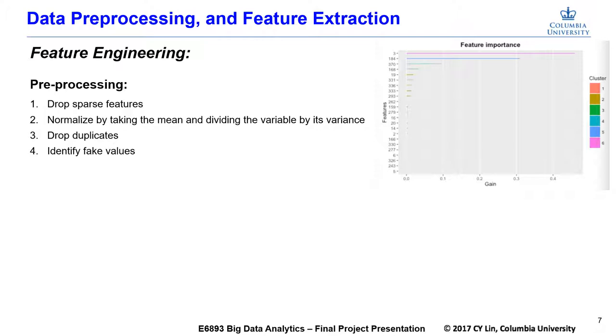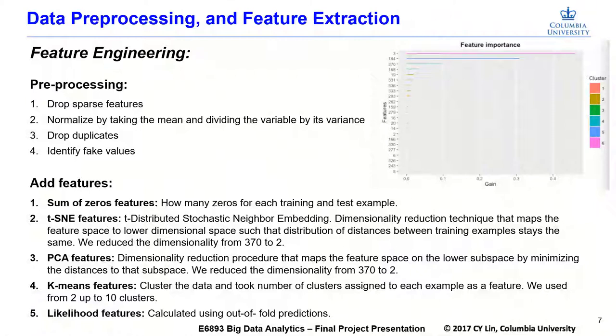Then we use different methods to add features, like sum of zero features, likelihood features. We use TSNE and PCA to reduce the dimensionality from 370 to 2. We also use K-means to cluster the data and took number of clusters assigned to each example as a feature, using from 2 up to 10 clusters.